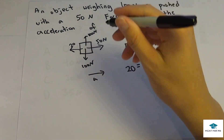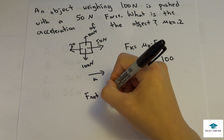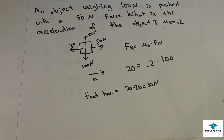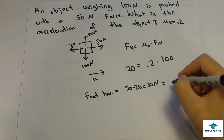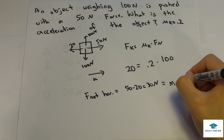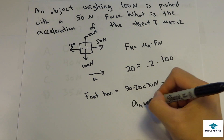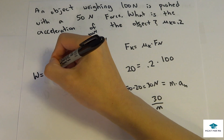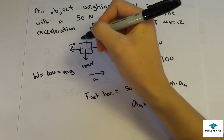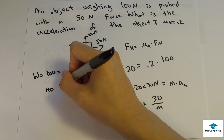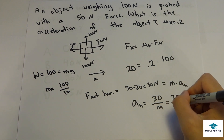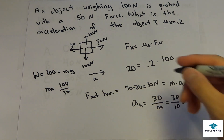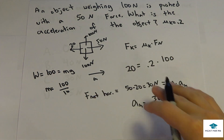We're pushing with 50 N and kinetic friction is 20 N, so the net horizontal force is 50 − 20 = 30 newtons. Using F = ma, we get 30 = m × a. The mass comes from the weight: W = mg, so m = 100 ÷ 10 = 10 kg. Therefore, acceleration = 30 ÷ 10 = 3 m/s² to the right. Always give acceleration a direction.